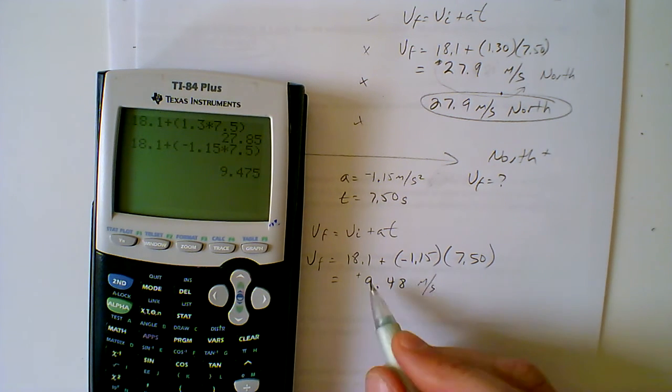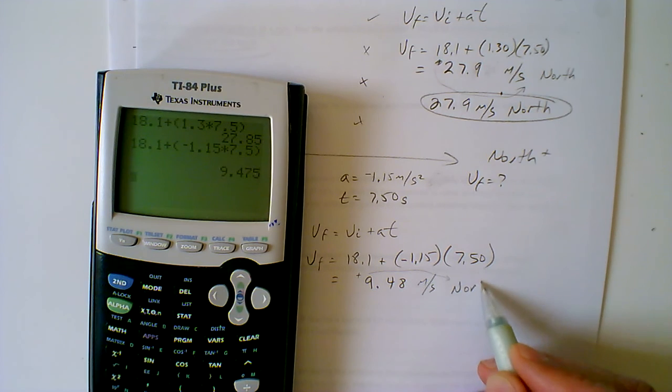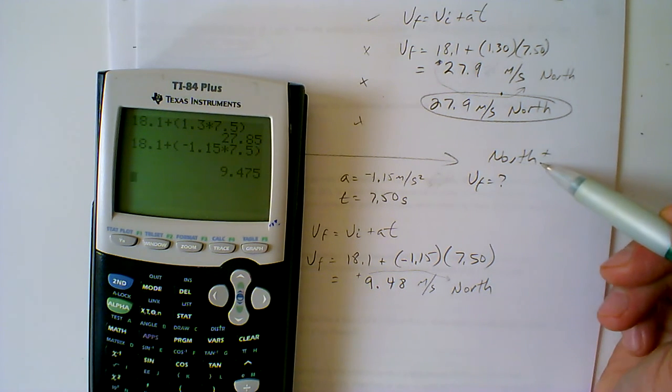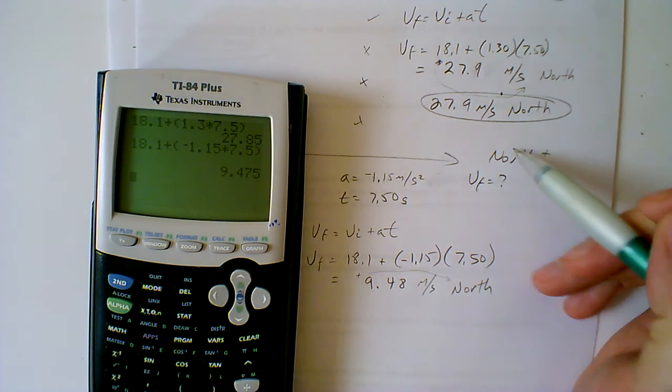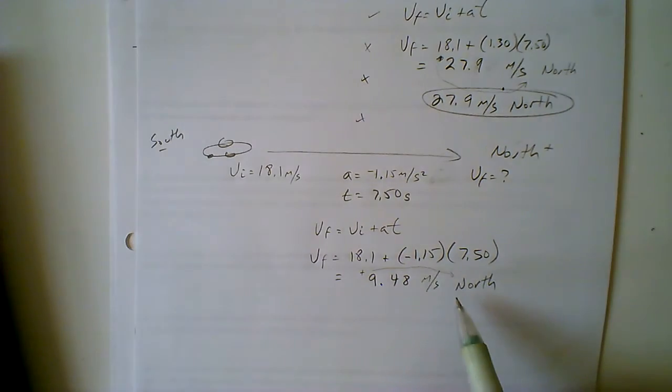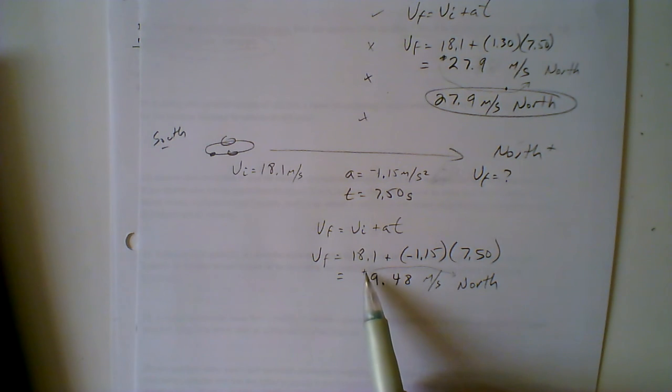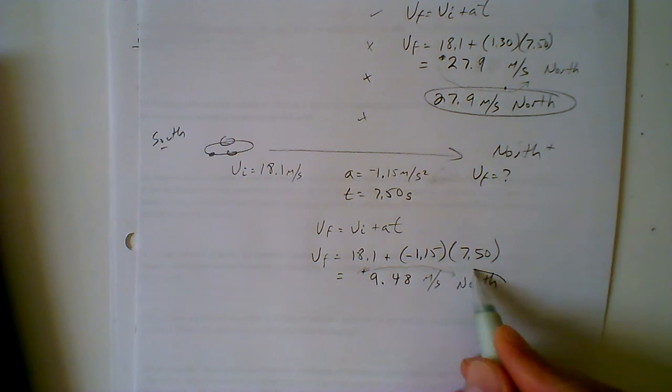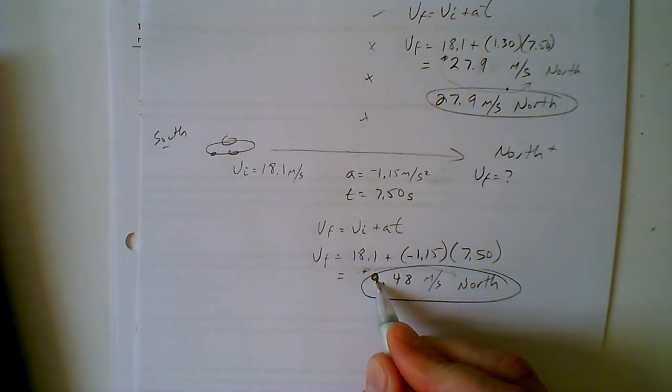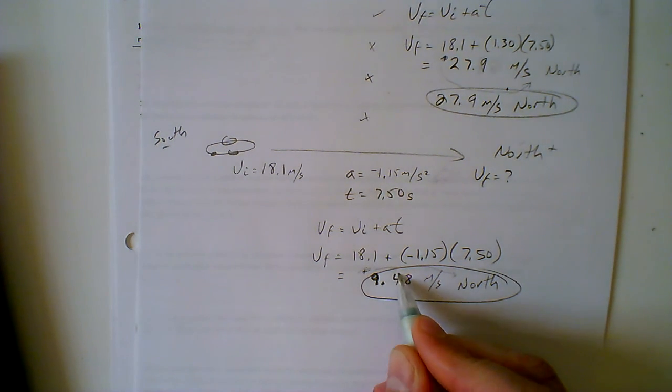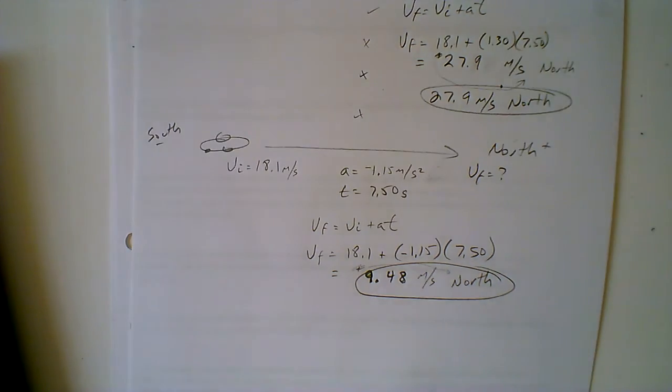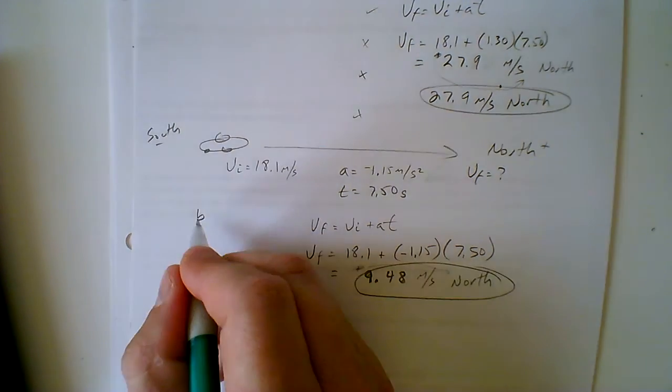So therefore that's going to be represented by the direction north, since we considered north positive here, south being negative. And our final answer was a positive, we turn that back into out of calculator language, mathematical language, and turn into the north side. So our final answer, we no longer are concerned with that, is this right here, 9.48 meters per second north for part B, part A.